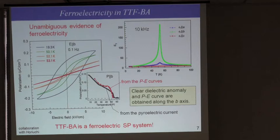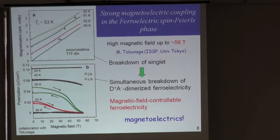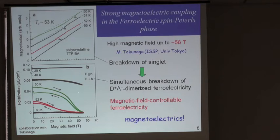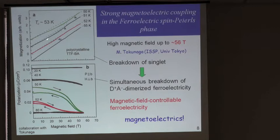Another hallmark of the spin-Peierls system is that the dimerized state is amenable to an external magnetic field. The Tc is around 50–60 K, so the magnetic energy scale is high, but we applied magnetic fields up to 60 T in collaboration with Professor Tokunaga at the University of Tokyo. Near the transition temperature, we observed the polarization disappearing upon application of the magnetic field, along with a tiny magnetization jump — the non-magnetic to paramagnetic transition — confirming this is a magneto-electric or multiferroic material.